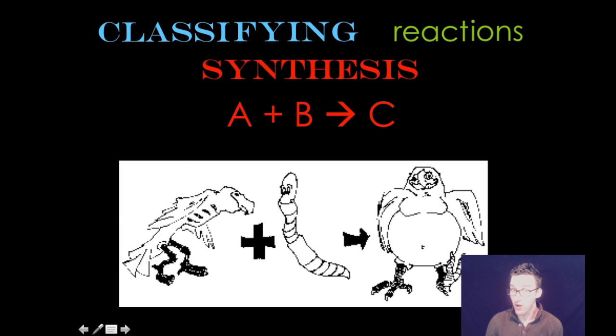As you look at this drawing to help you better understand what's going on in a synthesis reaction, we've got two separate things to begin with. And then this little skinny bird eats this giant worm and becomes this huge fat bird. In other words, two small things come together to form one large thing. Synthesis reaction.